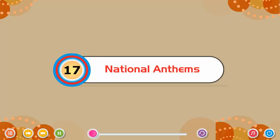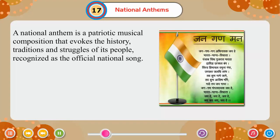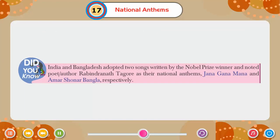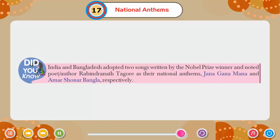Chapter 17: National Anthems. A national anthem is a patriotic musical composition that evokes the history, traditions and struggles of its people, recognized as the official national song. Did you know India and Bangladesh adopted two songs written by the Nobel Prize winner and noted poet Rabindranath Tagore as their national anthems — Jan Gana Mana and Amar Sonar Bangla, respectively.